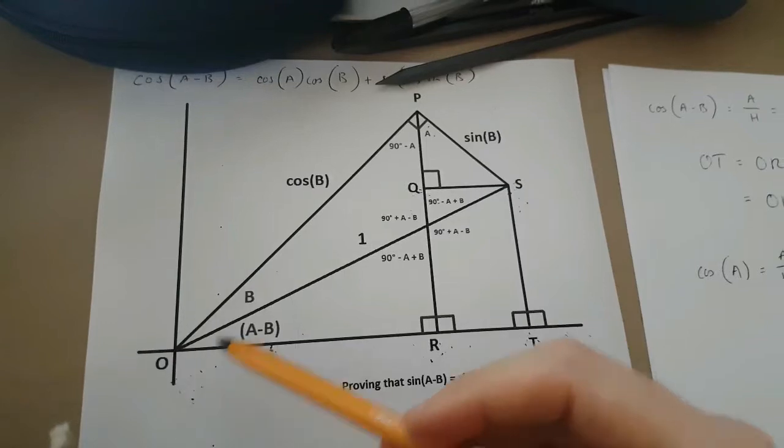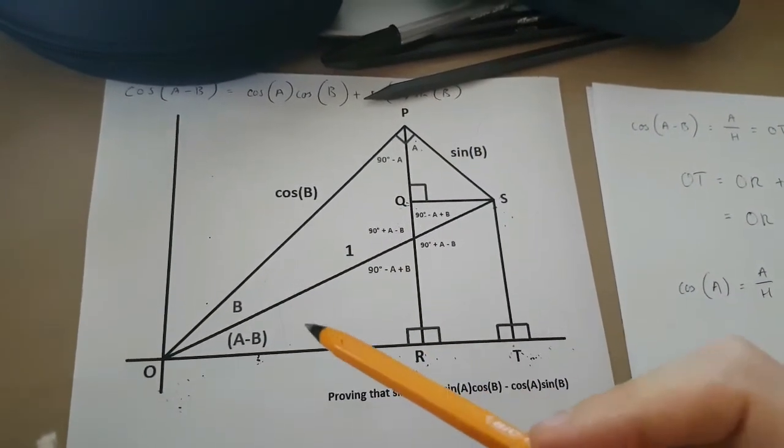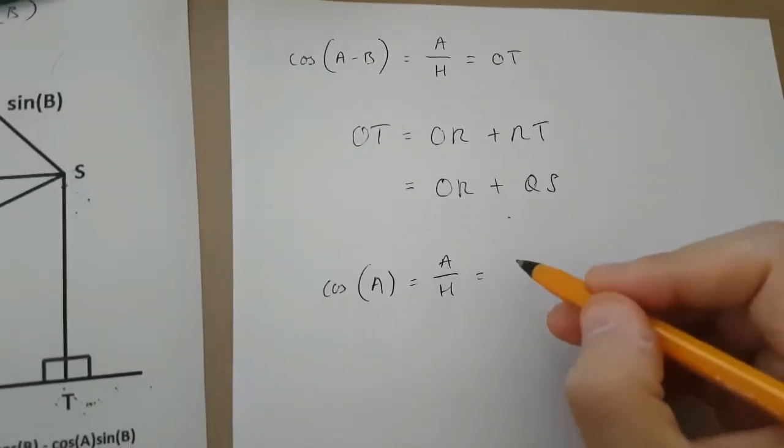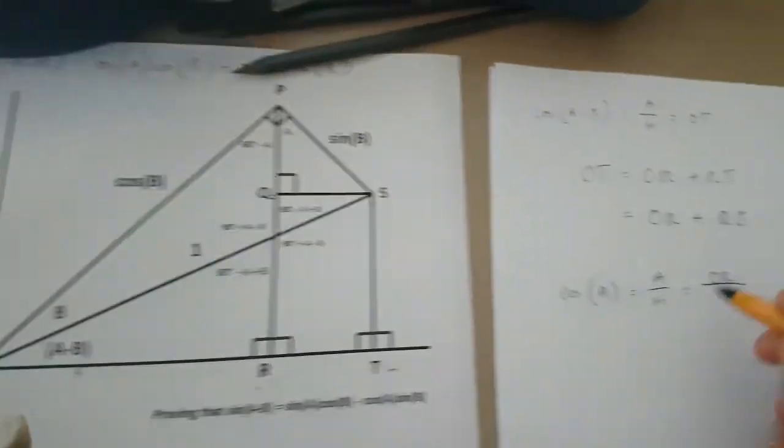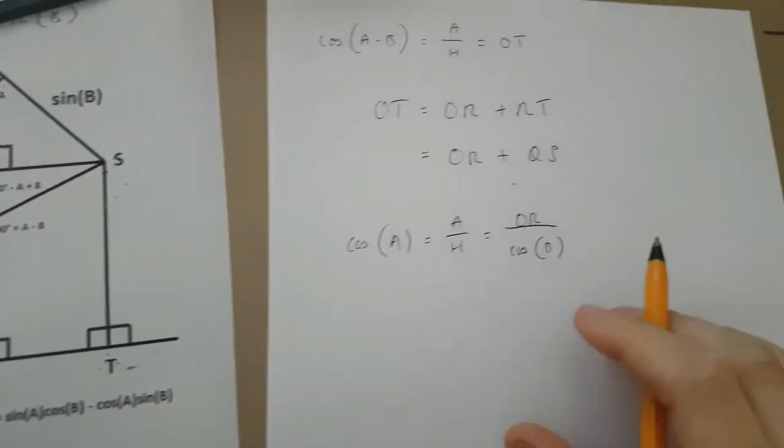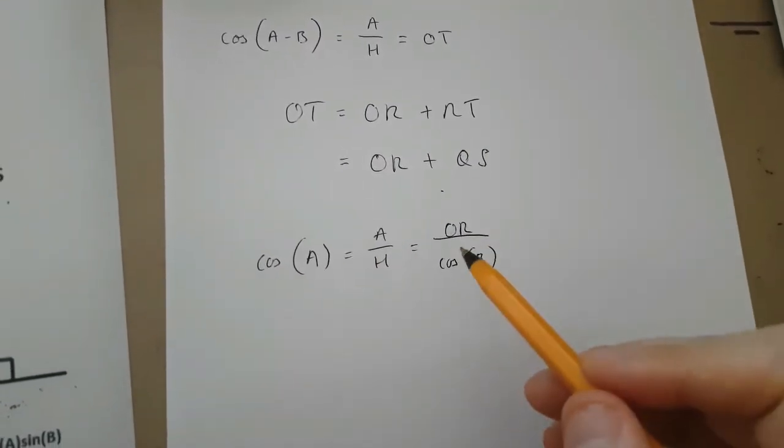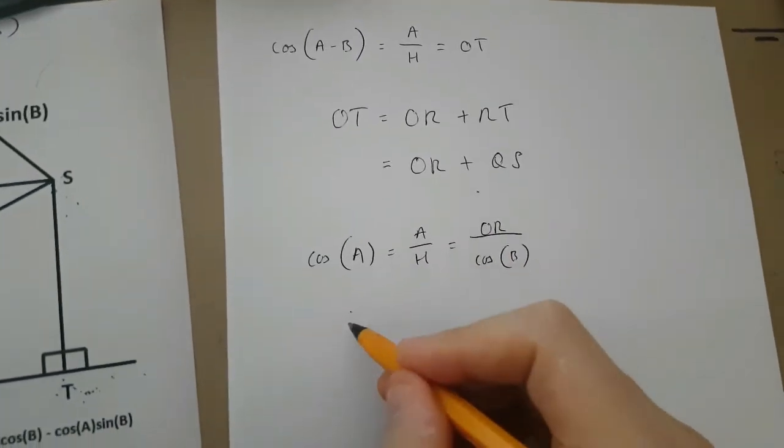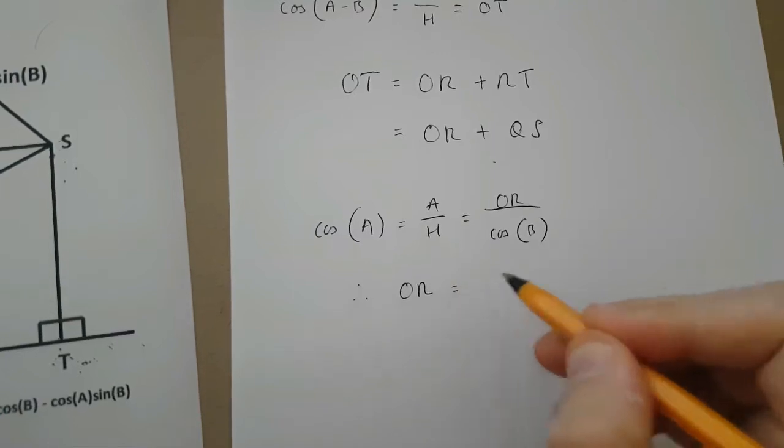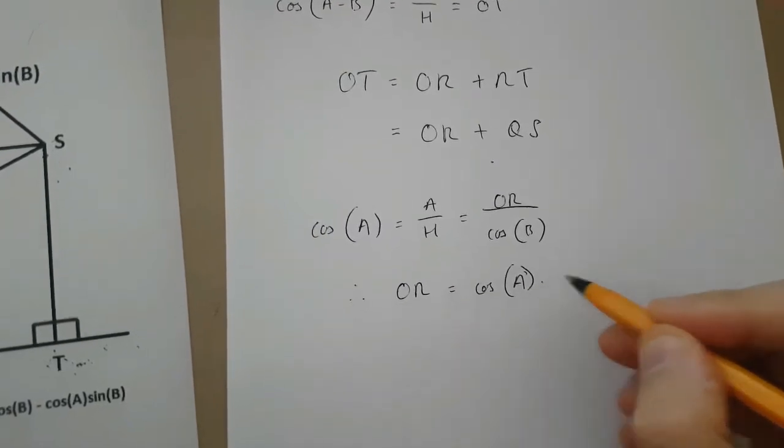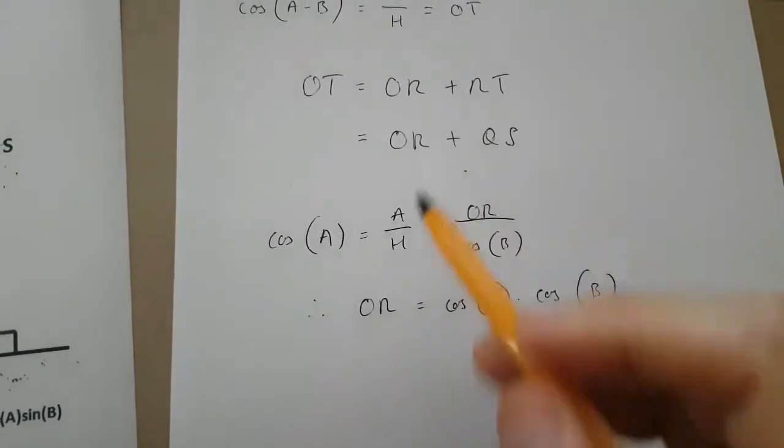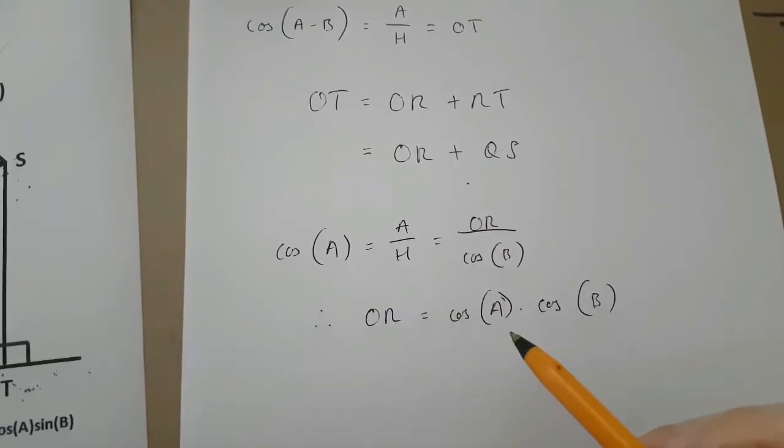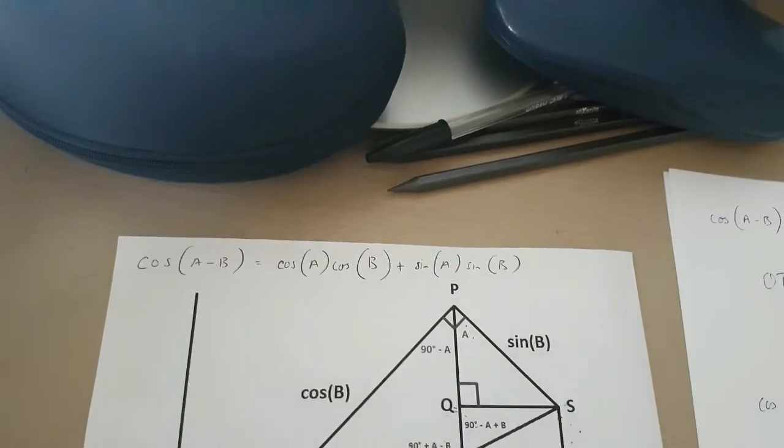Because the adjacent of this triangle over here with an angle A is OR. And its hypotenuse is, in fact, cos(B). Now, if we know that cos(A) equals OR over cos(B), this means that OR is cos(A) times cos(B). And we've discovered what OR is, which means we only have to discover what QS is to prove this up here.